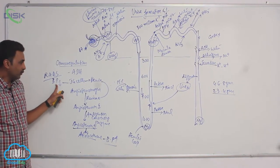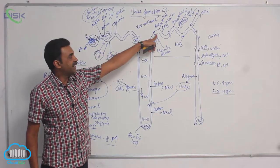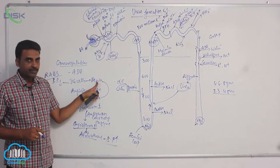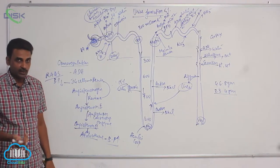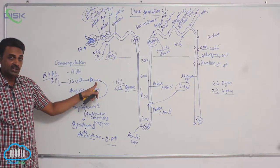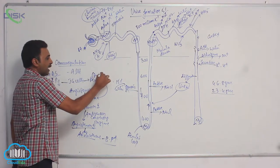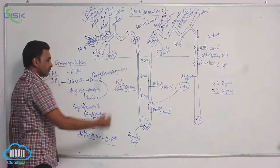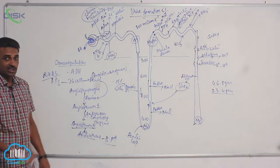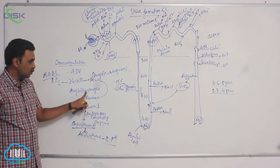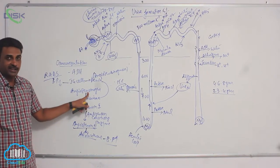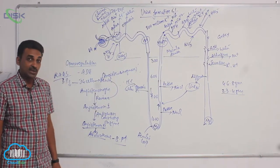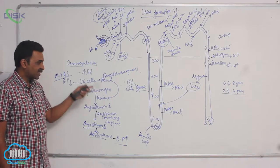Whenever blood pressure comes down, the macula densa detects that reducing blood pressure and stimulates the JG cells to release renin. Renin acts on angiotensinogen — that's why renin is also called angiotensinogenase. It acts on angiotensinogen.